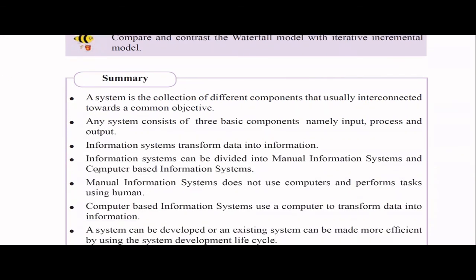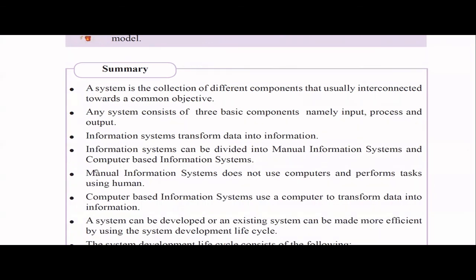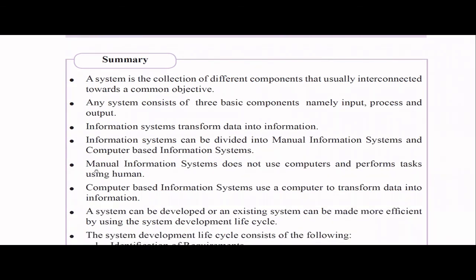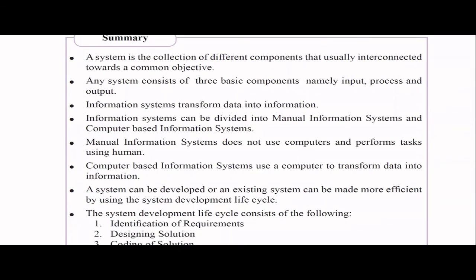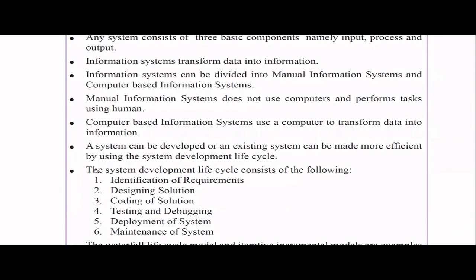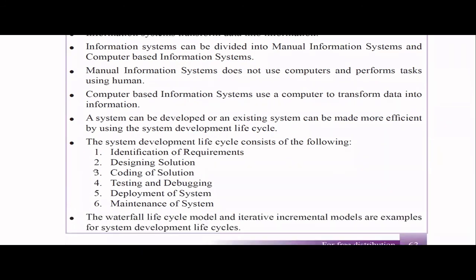That's the end of this chapter. We learned about what a system is, what are the components of a system, how information systems can be divided into manual and computer-based, the differences and benefits, how to develop software, the six life cycle steps, and two SDLC models. Definitely from this chapter you will get exam questions and you can score very easily because it's an easy chapter. Thank you for watching — if you like my videos, please share, comment, and subscribe. If you want to join my classes, please contact as well.